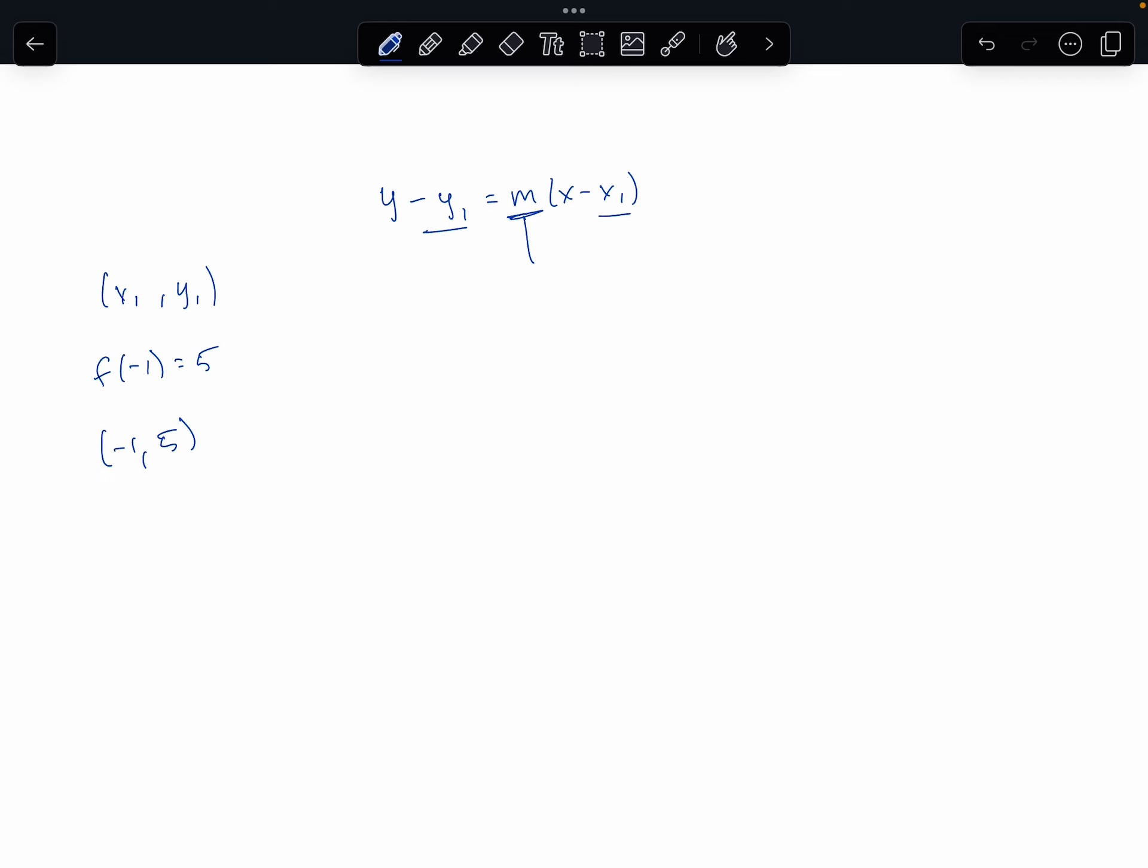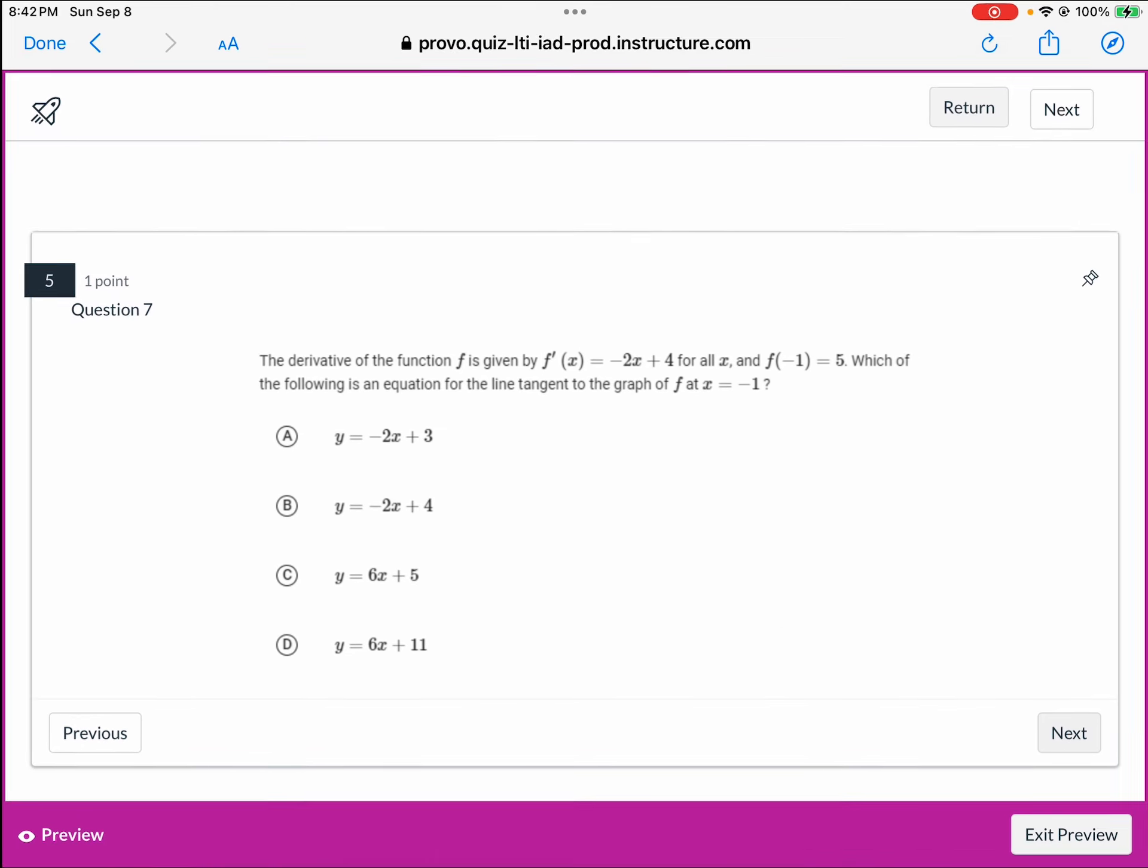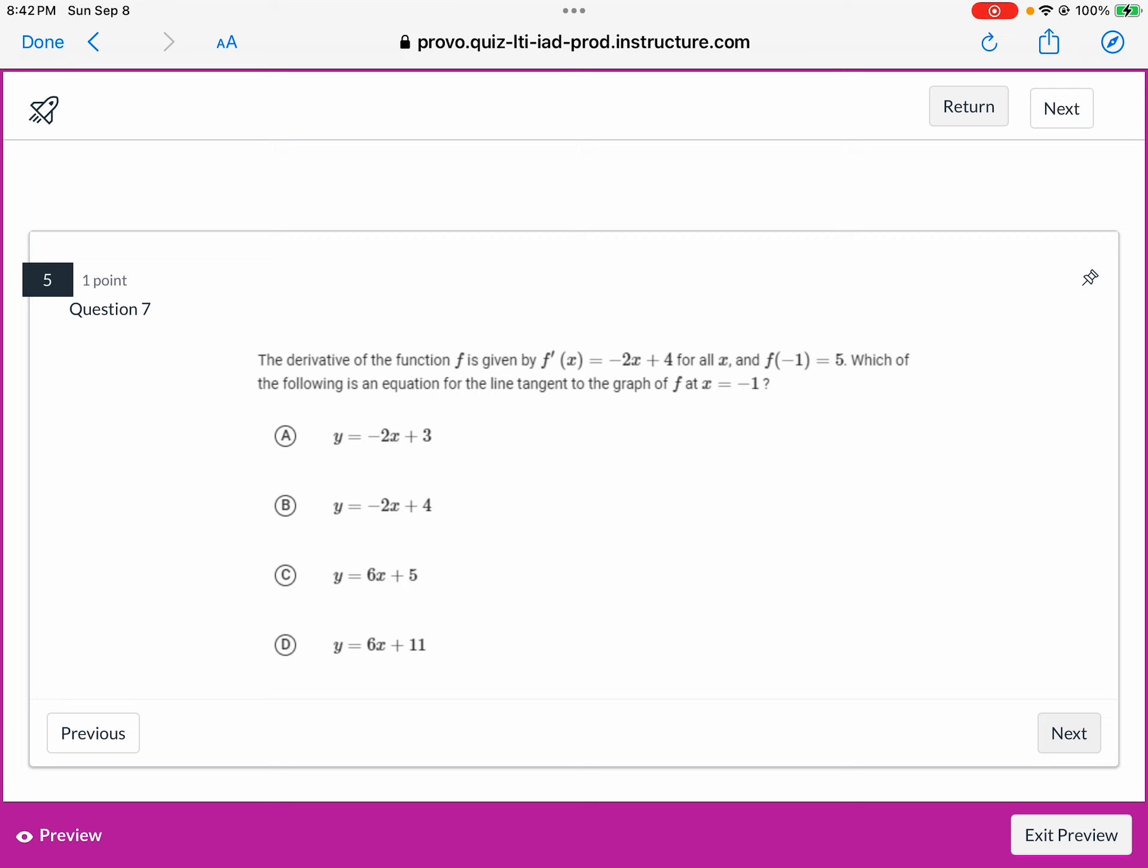We need to find m, which is f prime, but we want to find the slope at the same x value given here. So m, in this case, will be f prime of negative 1. So we can get that by using the formula and go from there. Now, the equations given to us are in slope-intercept form, so if you want, you can just use slope-intercept form. But usually what I do is use point-slope form and then convert to y-intercept form, but that's what you'll do in this problem.